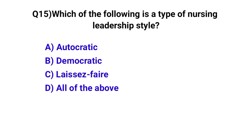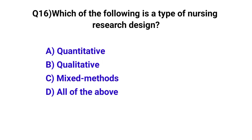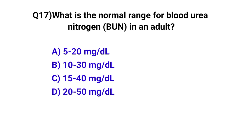Question number fifteen: which of the following is a type of nursing leadership style? The correct option is D, all of the above. Question number sixteen: which of the following is a type of nursing research design? The correct option is D, all of the above. Question number seventeen: what is the normal range for blood urea nitrogen in adults? The correct option is A, 5 to 20 milligrams per deciliter.